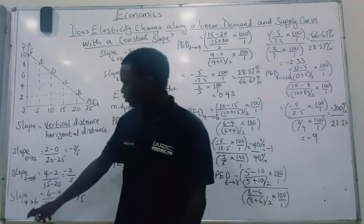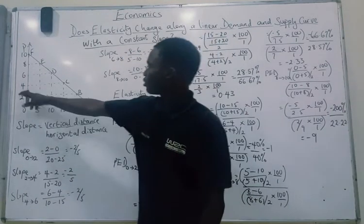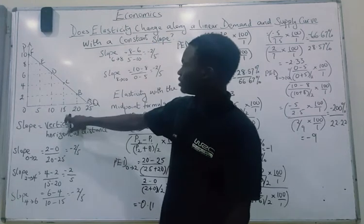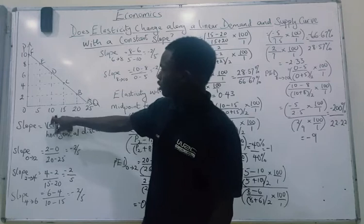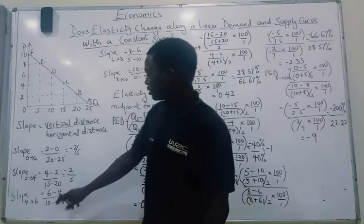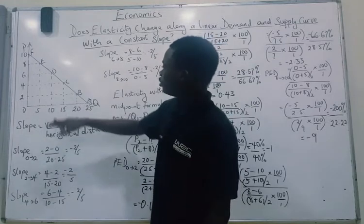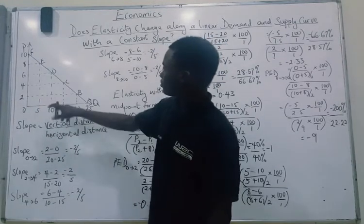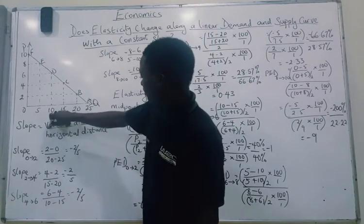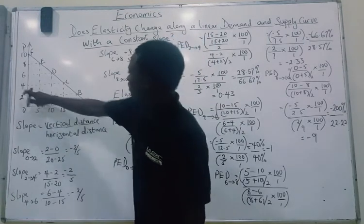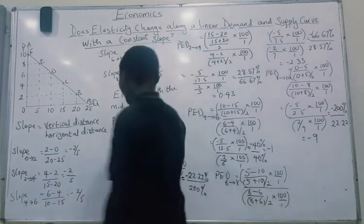Now we check the slope from price 4 to price 6. When the price was 4, quantity was 15; when the new price became 6, quantity is 10. So new price minus old price is 6 minus 4, divided by the new quantity 10 minus the old quantity 15. We still have minus 2 over 5 again.